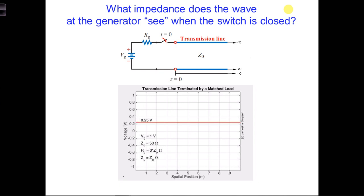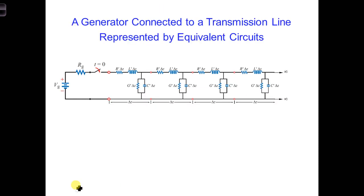Well, we know what the battery sees when the switch is closed because we developed an equivalent circuit for the transmission line. This is what the generator sees, the first equivalent circuit with more equivalent circuits beyond it.